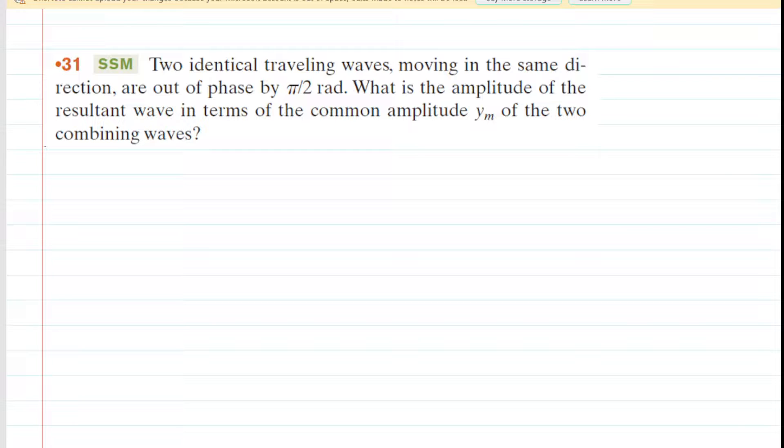We have two identical traveling waves moving in the same direction, and importantly, they are out of phase by π/2 radians. We need to figure out the amplitude of the resultant wave in terms of y_m, which is the common amplitude of the two combining waves.